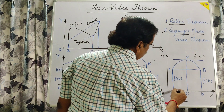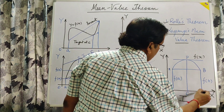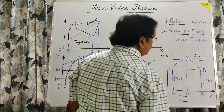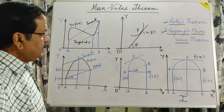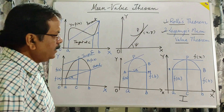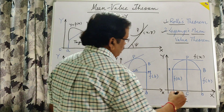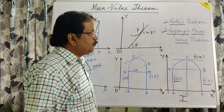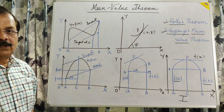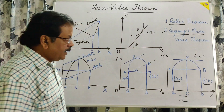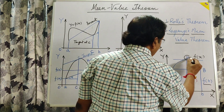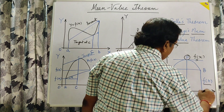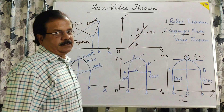If A and B are two values on the abscissa — that is the X values — and for these two values the Y coordinates f(A) and f(B) are equal, then Rolle told that there exists at least one point in between A and B where the tangent drawn will be parallel to the X axis.